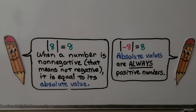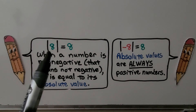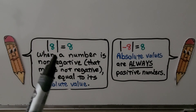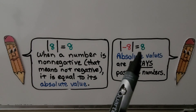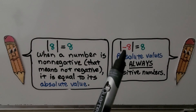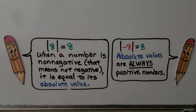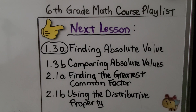When a number is non-negative, that means it's not negative — it's equal to its absolute value. So positive 8 has an absolute value of 8; it's equal to its absolute value and it's not negative. Absolute values are always positive numbers. The absolute value of negative 8 is 8 — it's a distance, 8 jumps from zero, so it's positive 8. If you missed the previous lesson, 1.3a, it's in the description of this video and you can click on it.